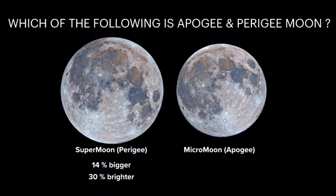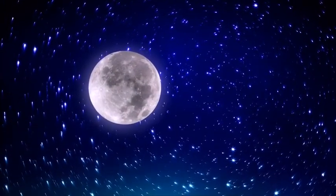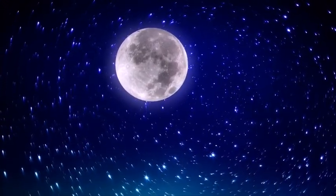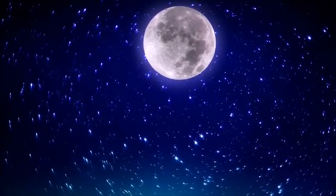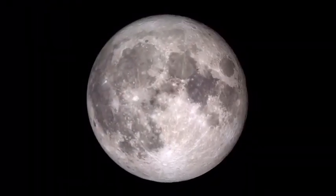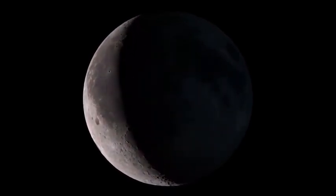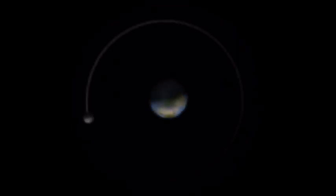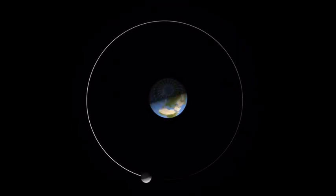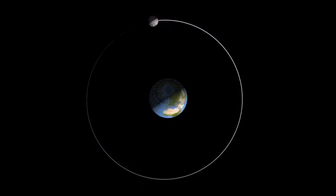Next we'll watch a quick video and then come back to summarize what we learned. The moon is the brightest and most noticeable object in the night sky, but it is never quite the same from one night to the next. The moon has phases, which means it appears to change shape a little every night. The moon orbits around the earth much like the earth orbits around the sun; however, while the earth takes about 365 days, the moon completes its orbit in only 29 and a half days — about one month.